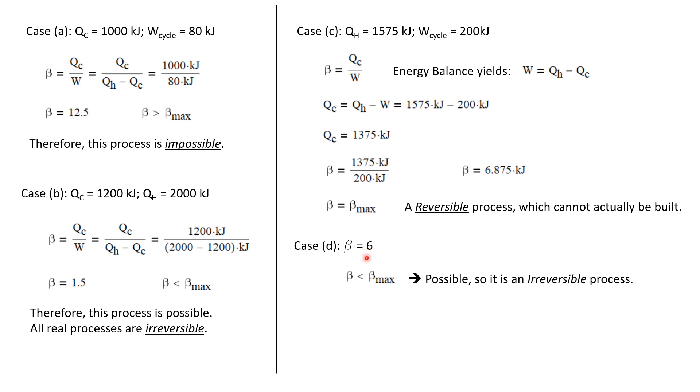Case D is simple. Beta is given as six. This is less than beta max, so this is very possible and describes an irreversible process.